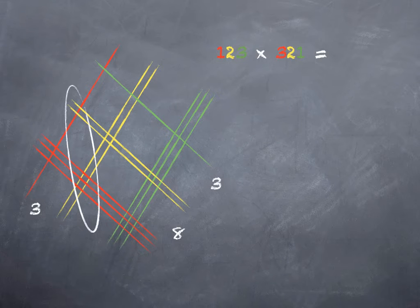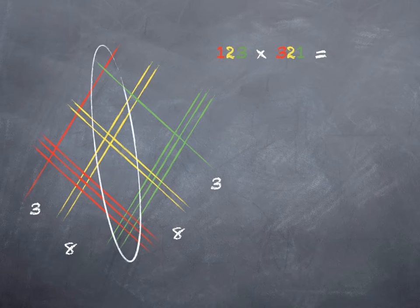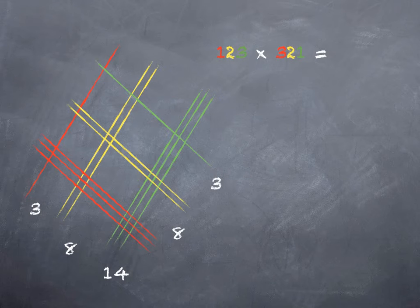Now I have red and yellow, so that's hundreds and tens, which is going to give me thousands. If you count them up, there are eight of those. And in the middle, I either have red intersecting green, which is ones and hundreds, or I have yellow intersecting yellow, which is tens and tens. Either way, that's the hundreds place. And if you count them up, you wind up with fourteen hundreds.